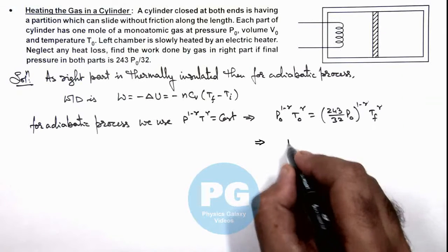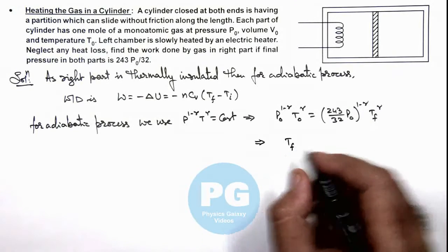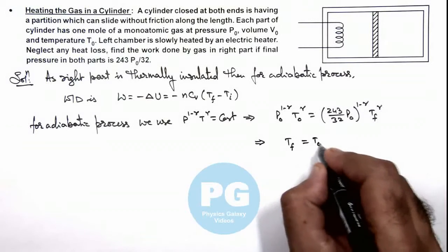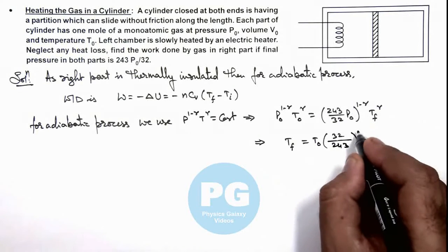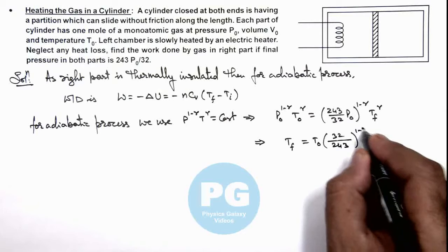Which will result in the value of final temperature of gas, which is t_not multiplied by (32/243) to power (1 minus gamma) by gamma.